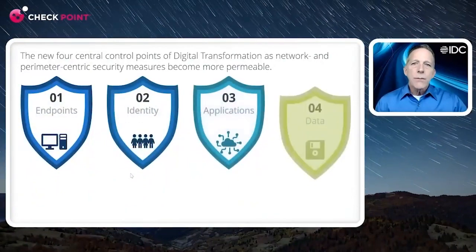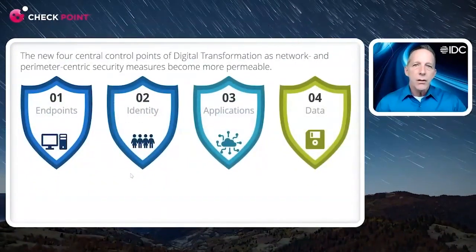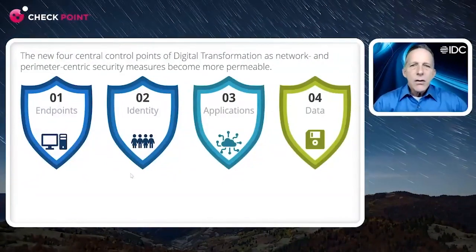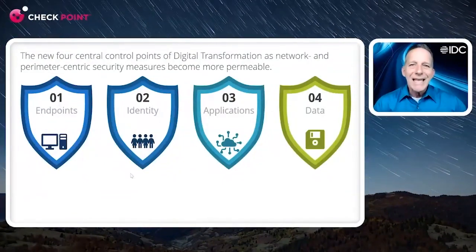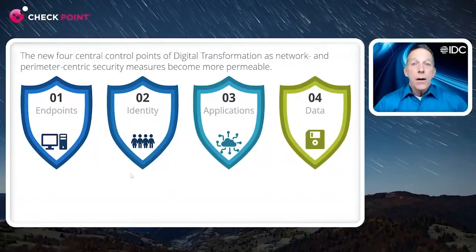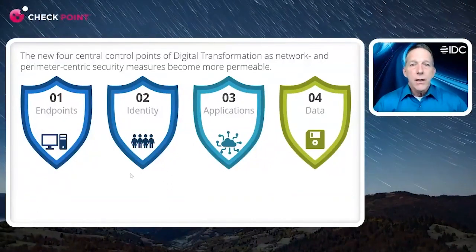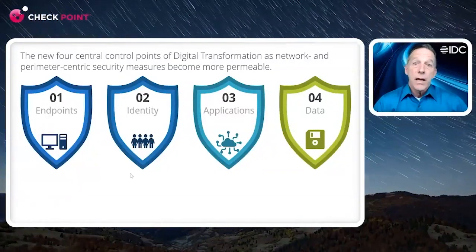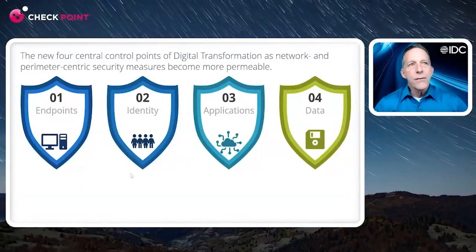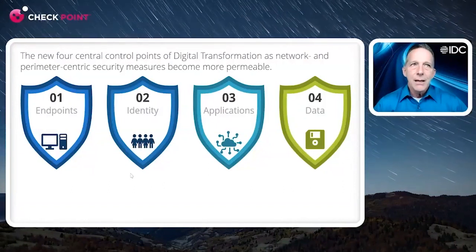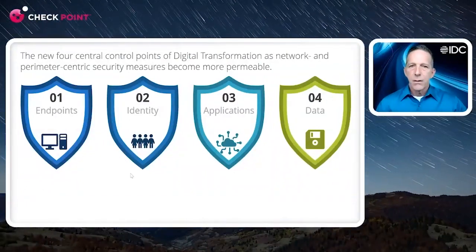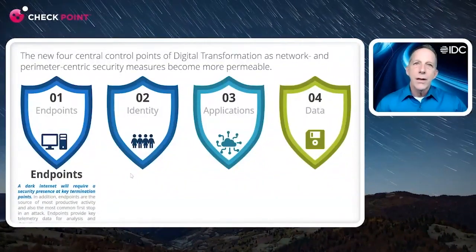It's not just about complexity — the fundamental way we implement security is going to change. We created a framework called the four new control points back in 2018. As environments multiply, our people, data, and applications leave the perimeter, meaning we have to apply security differently across those four control points: identity, endpoint, application, and data. Because if everything is encrypted, a dark internet means we have to apply security at the endpoint.